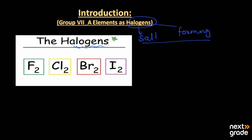The halogens include basically five elements: the first is fluorine, the second is chlorine, the third is bromine, and the fourth is iodine. After iodine there is a compound known as astatine, but it is rarely studied, so we do not include it here and focus on just the first four elements of Group 7A.